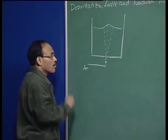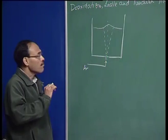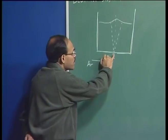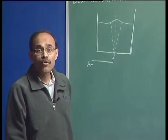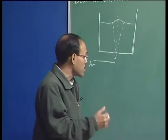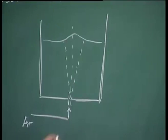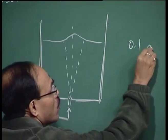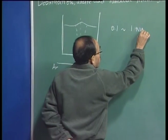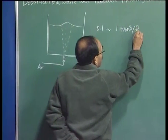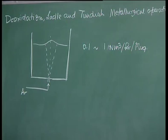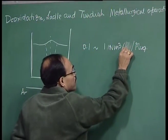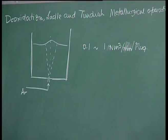We are injecting argon through the nozzle. The injected flow rate of argon through the central nozzle varies over a wide range and is substantially smaller than the flow rates of oxygen used for primary steelmaking processes. The value is about 0.1 to 1 normal meter cube per minute per plug — that is the range of flow rate which one uses.